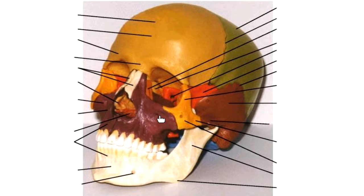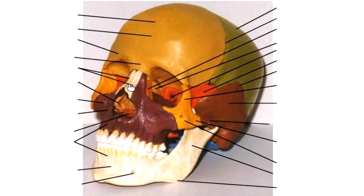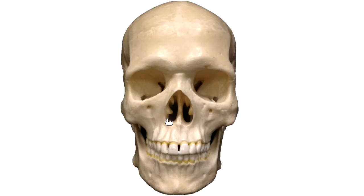On the colored skull: the lacrimal bones are visible in the orbit region. The palatine bones are on the bottom of the skull. The nasal bones are on the bridge of the nose. The inferior nasal concha — I like to call them the booger bones — look like boogers on the inside of the nose. The vomer creates the nasal septum dividing the two nostrils.